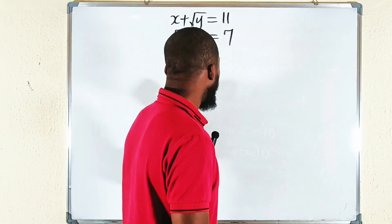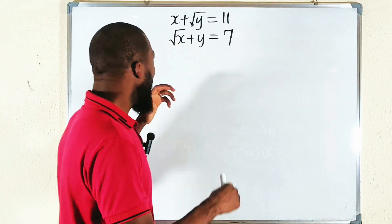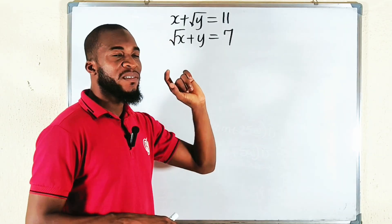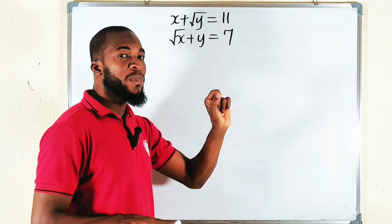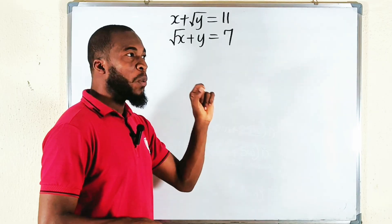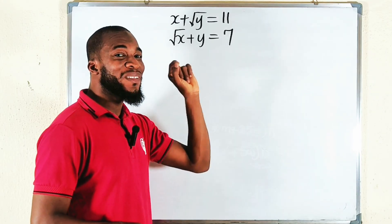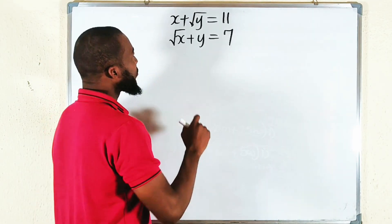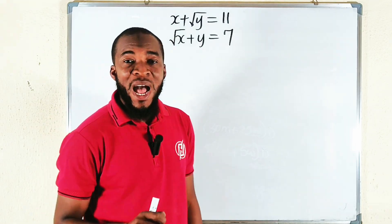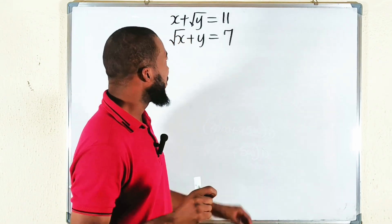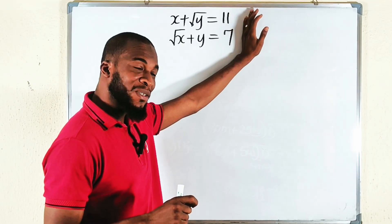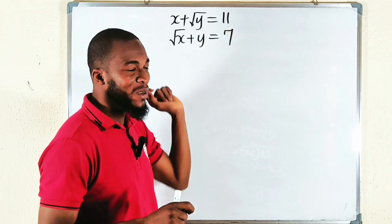Before you start solving this problem, there are important things you should know. Number 1: both x and y are positive integer numbers greater than 0. And both x and y are perfect square numbers — otherwise, we wouldn't have integers on the right. So, this is very important.